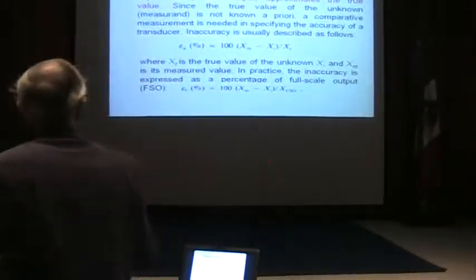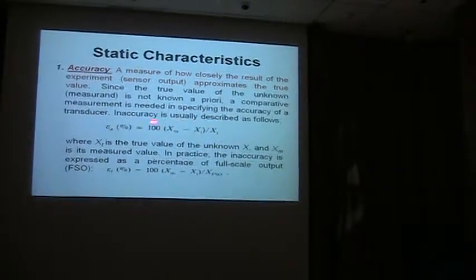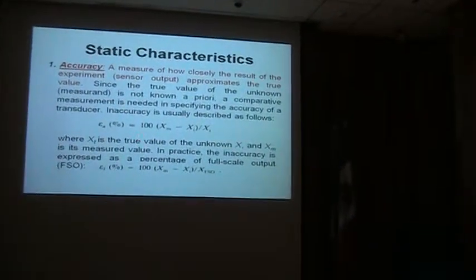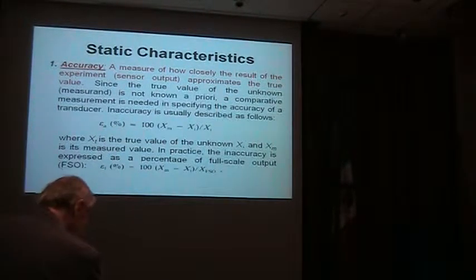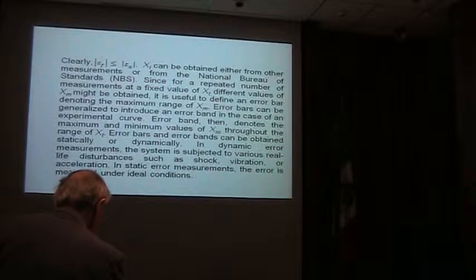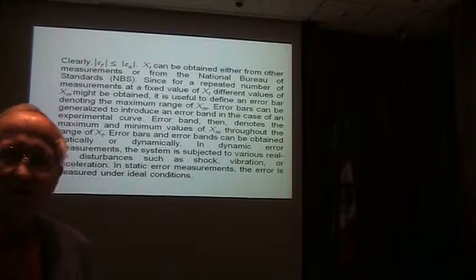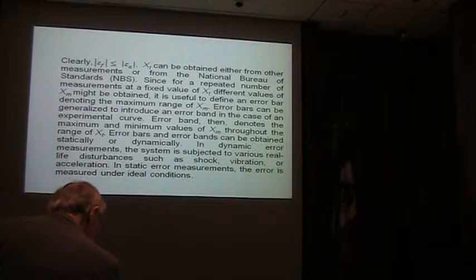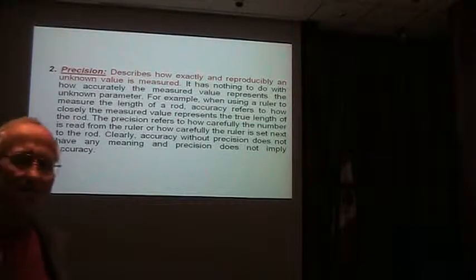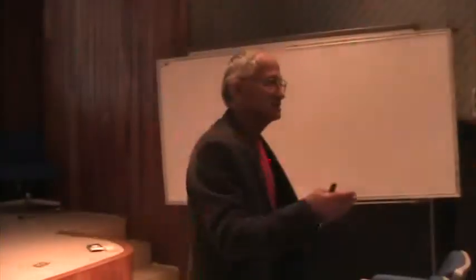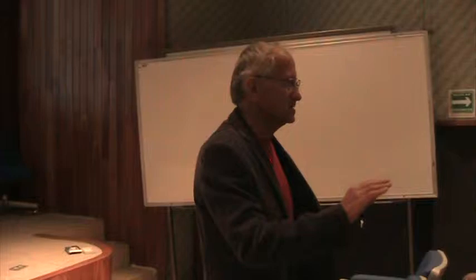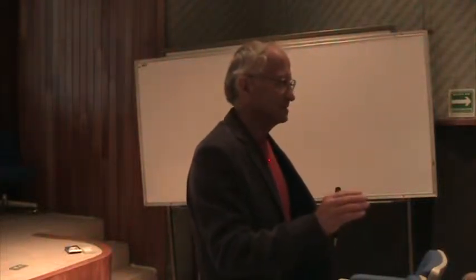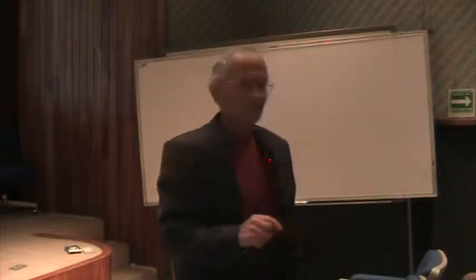Without a standard there is no proof — this is the disadvantage. With a standard, you have the standard algebra for accuracy and you can calculate accuracy. Most people believe that accuracy is the same as precision. It is not. In sensor technology, these are completely different parameters. Precision has nothing to do with accuracy and vice versa.